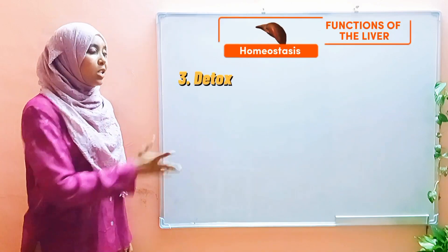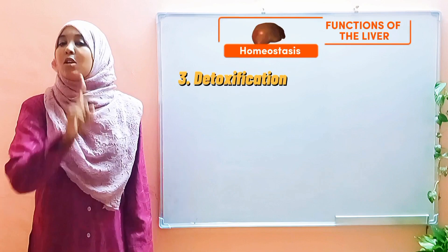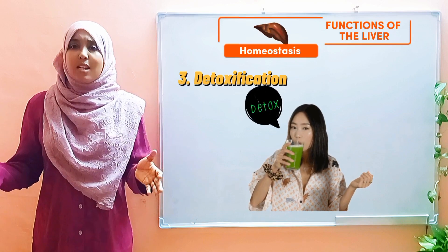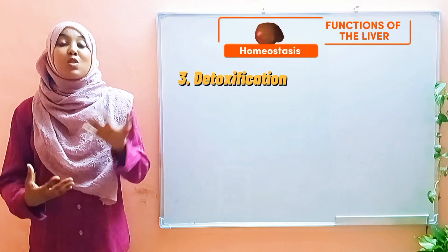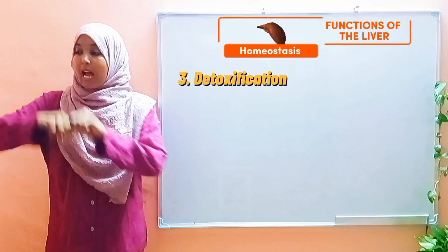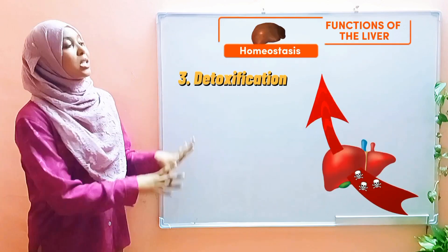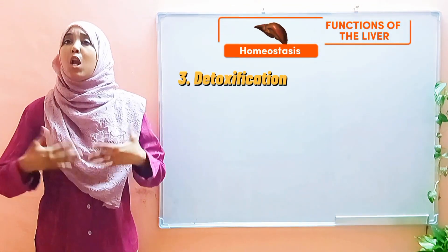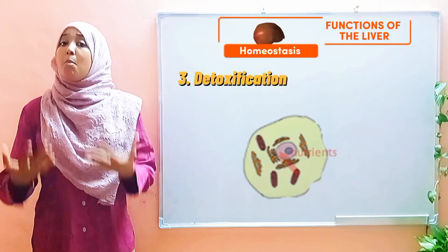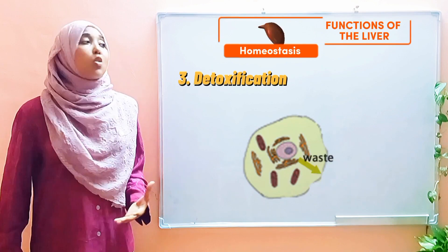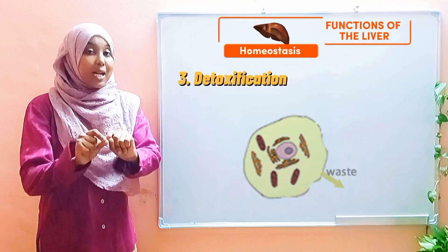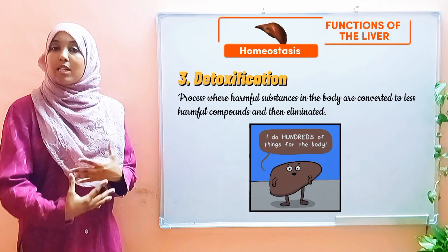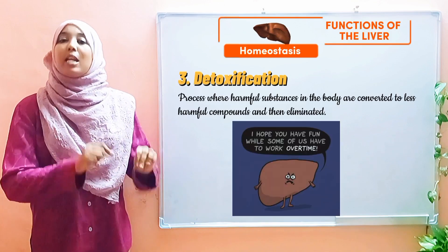Moving on to the next function: detoxification. You've heard of this term — people say 'I'm detoxing today.' So detoxification refers to a process whereby the liver converts harmful substances into substances that are less harmful for elimination. Our body carries out a lot of chemical reactions, and most of these lead to the production of harmful waste products. Before these waste products can be eliminated, they first need to be converted to less harmful substances.